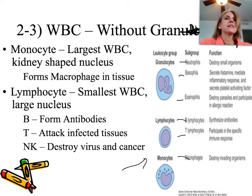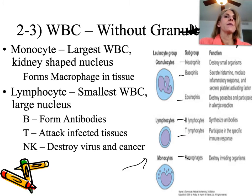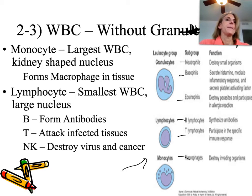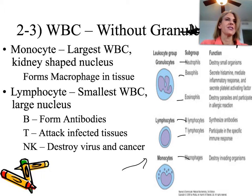Lymphocytes are your smallest white blood cells, and their nucleus takes up almost the entire cell — it's just a circular nucleus. Lymphocytes come in two main forms for now: the B cell and the T cell, with natural killer cells covered next chapter. The B cells form antibodies. The T cells destroy infected tissues — ones infected with viruses and cancer. For this chapter, just know the two types and that B cells make antibodies.